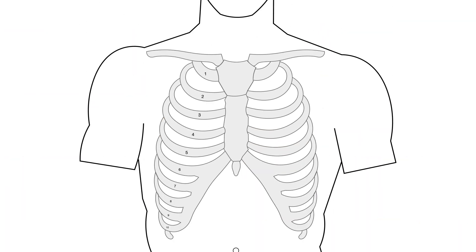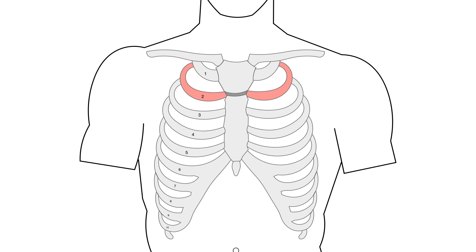This might be easier to demonstrate on a skeleton, so we'll put up a picture of one. Here we have the bones of the chest. On top is the manubrium, and right below it is the body of the sternum. The place where they come together is the sternomanubrial angle, and this gives us a reference point for the second rib. Above the second rib is the first intercostal space, and below the second rib is the second intercostal space.